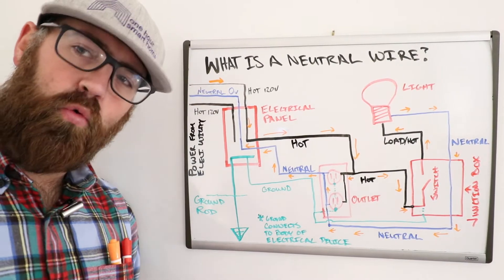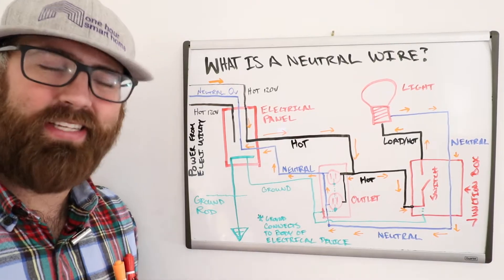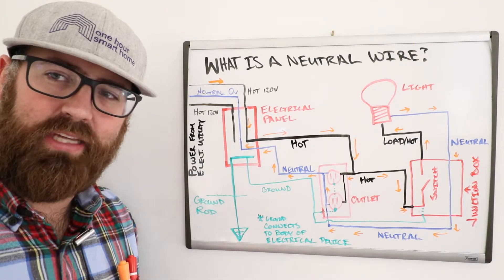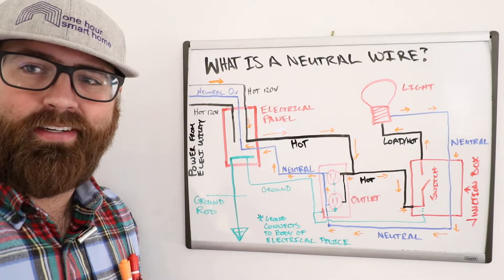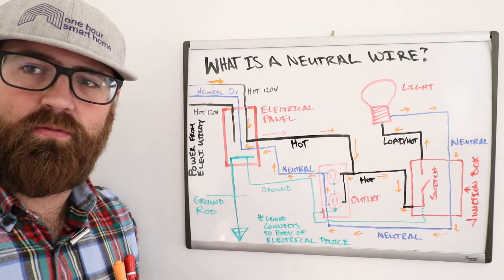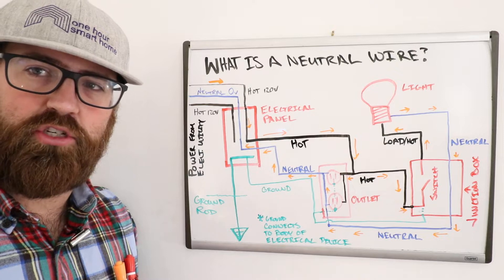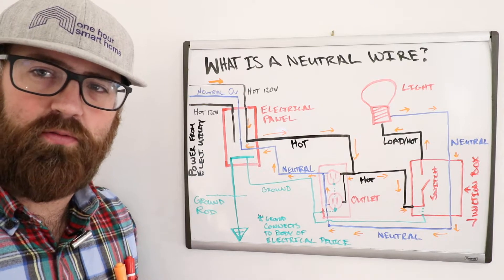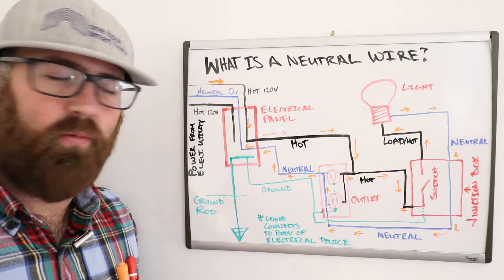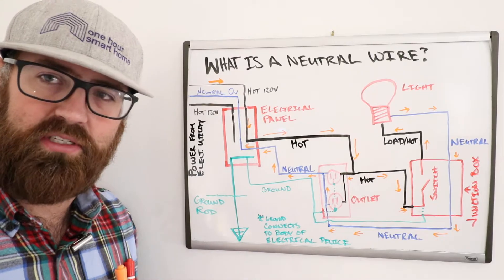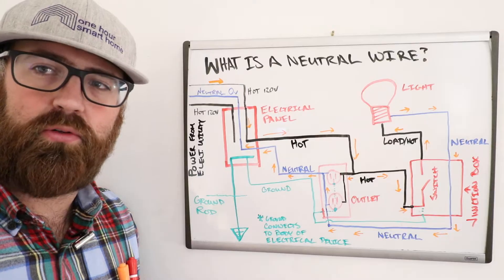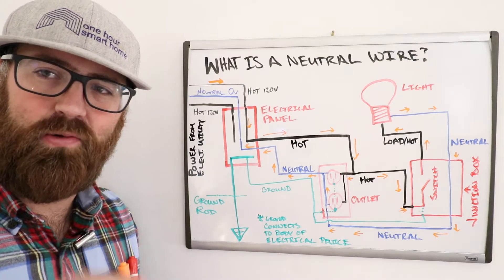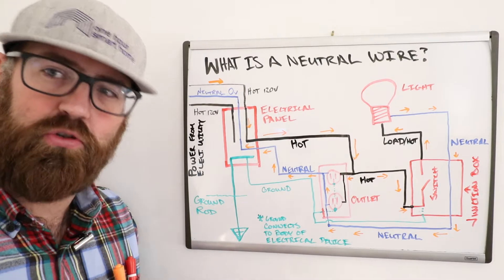A neutral wire at its most basic level is a wire that is the return path for current. It is essentially neutral. So voltage typically in a house is 120 volts. A neutral wire when there's no power going through the system is zero. It is the path back to zero volts or the path back to a potential of zero. It's neutral.